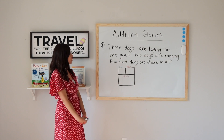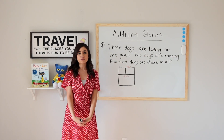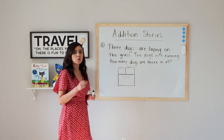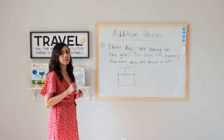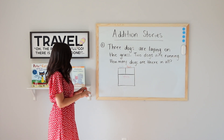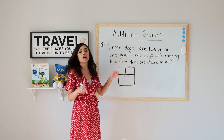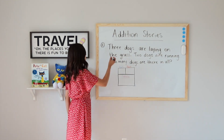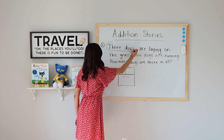Before I actually get started on this problem, I want to ask myself: what do I already know? To do this, I'm going to reread my problem and start circling things that I already know. Three dogs are laying on the grass — how many dogs are laying on the grass? Three. So I'm going to circle three dogs.